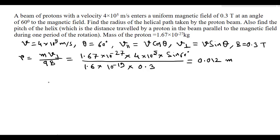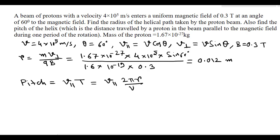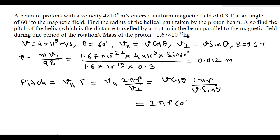The pitch = v_parallel × t, where t = 2πr / v_perpendicular is the period of circular motion. So pitch = v_parallel × (2πr / v_perpendicular) = v cos θ × (2πr) / (v sin θ) = 2πr cot θ.